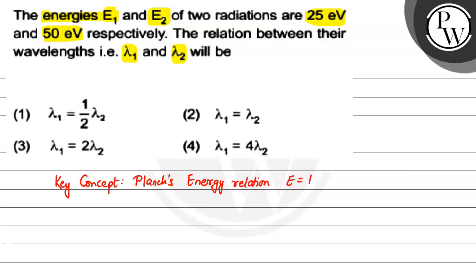Energy is equal to hc by lambda. H here is Planck's constant, c is speed of light, and lambda is wavelength. E represents energy.